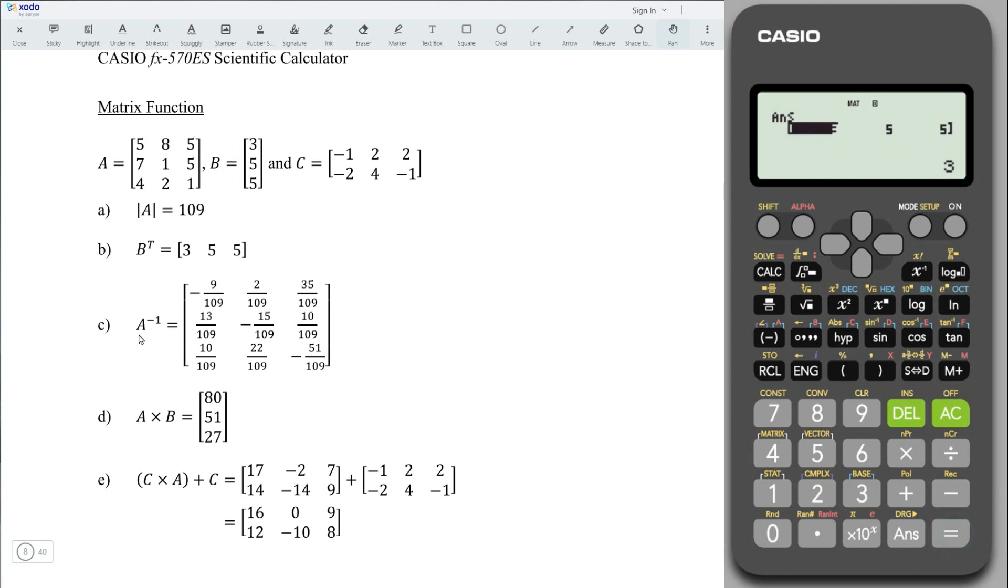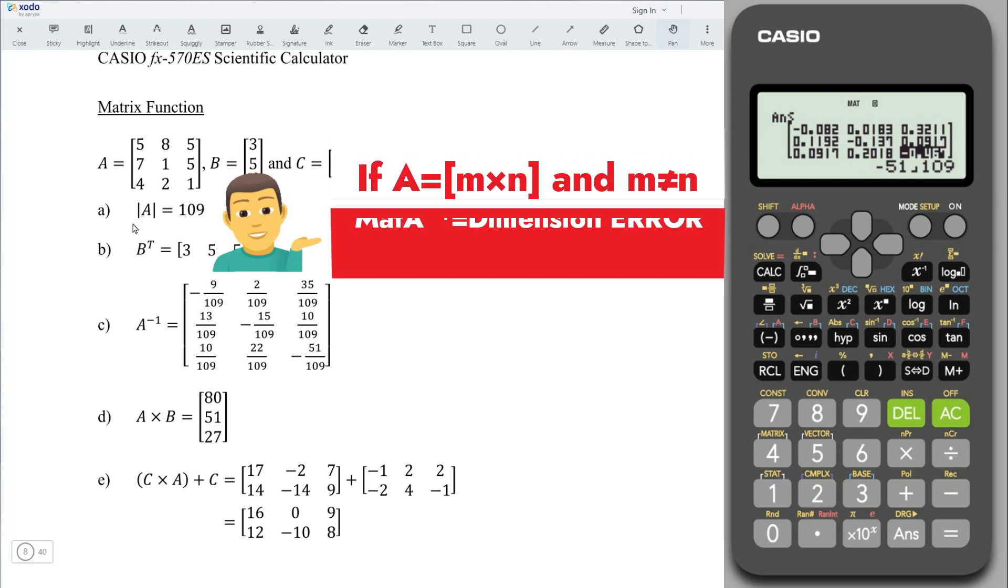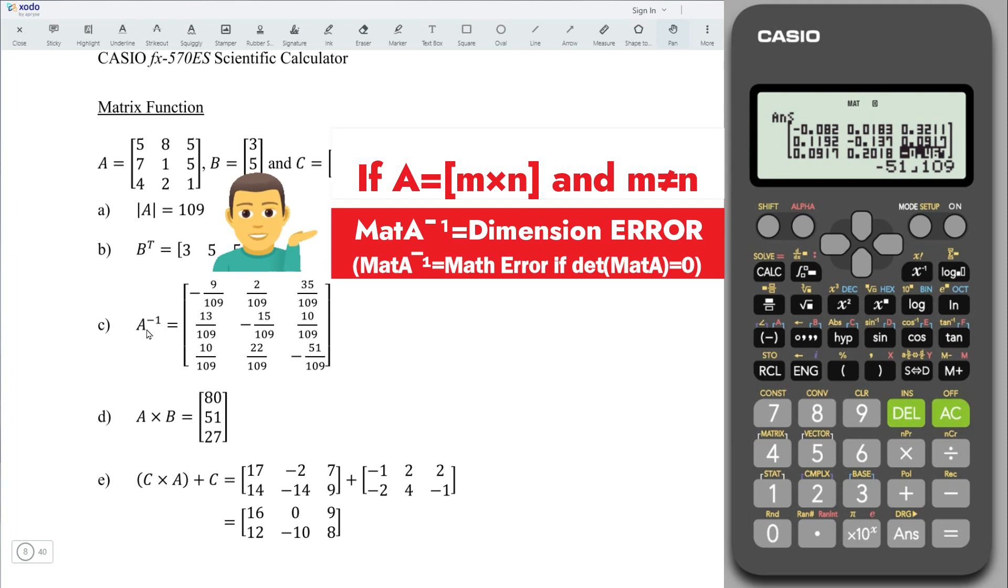Next, for part C. To obtain the inverse, we have shift 4. Choose the matrix directly, which is 3 for this case. And followed by the inverse button. Press on equal. And we should obtain the correct value. In terms of decimal numbers, to have in the form of fractional numbers, press on the arrow button to move to the desired entry. Note that same as part A, to obtain the inverse matrix, the particular matrix must be a square matrix.